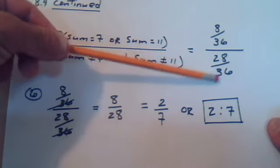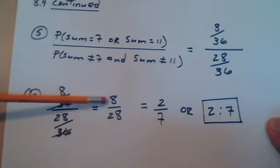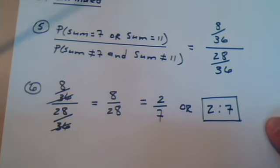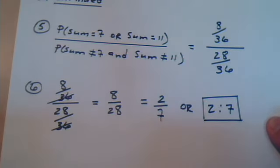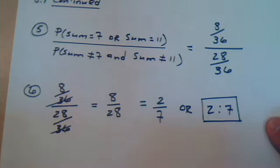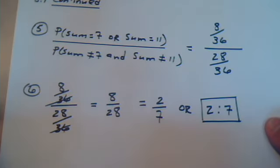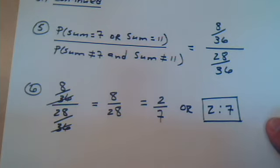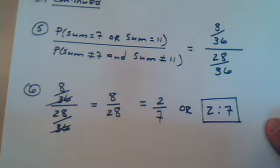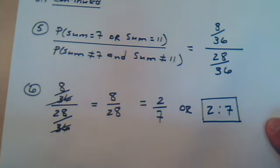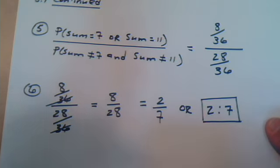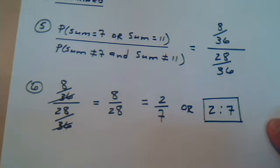So, you simplify this, the 36 cancel, reduce, you could write the odds this way or this way, or you could even say 2 to 7. So, here it is. These are the odds that the sum equals 7 or the sum equals 11 when you toss the pair of dice.